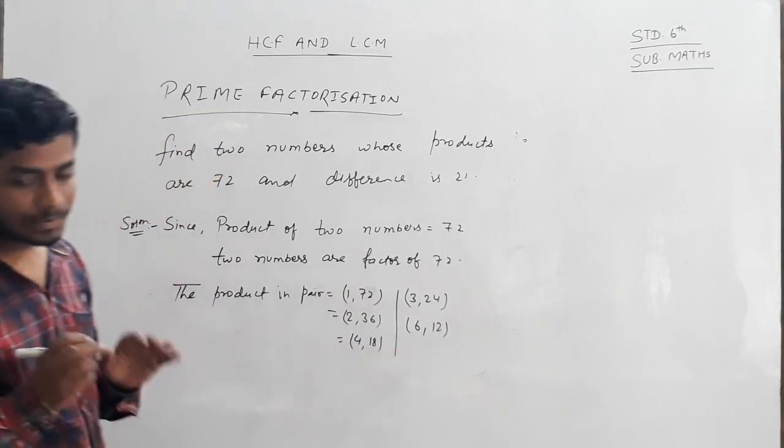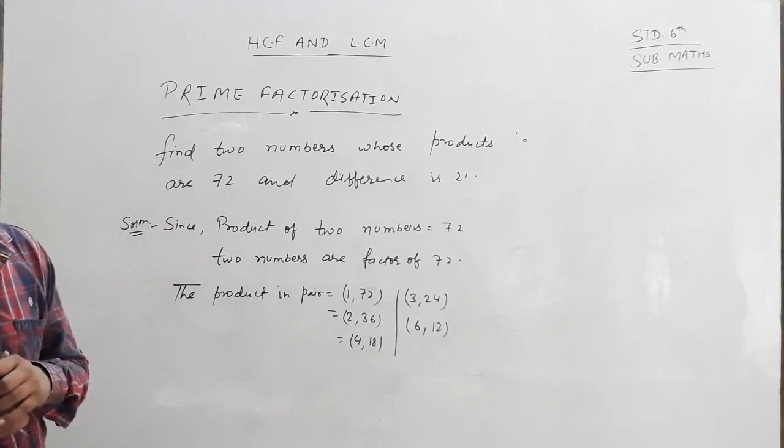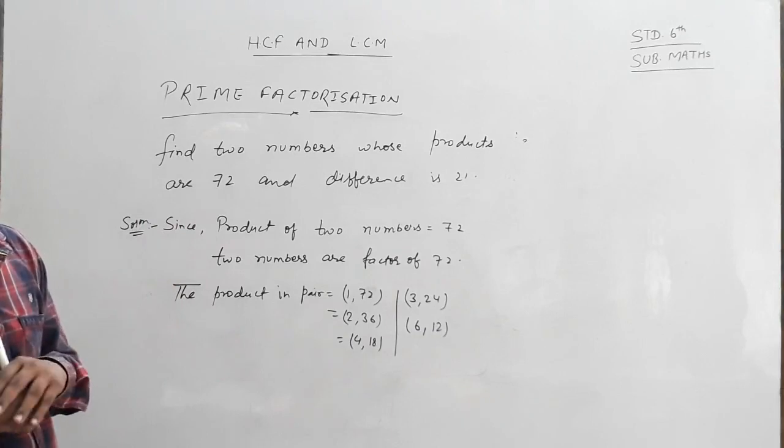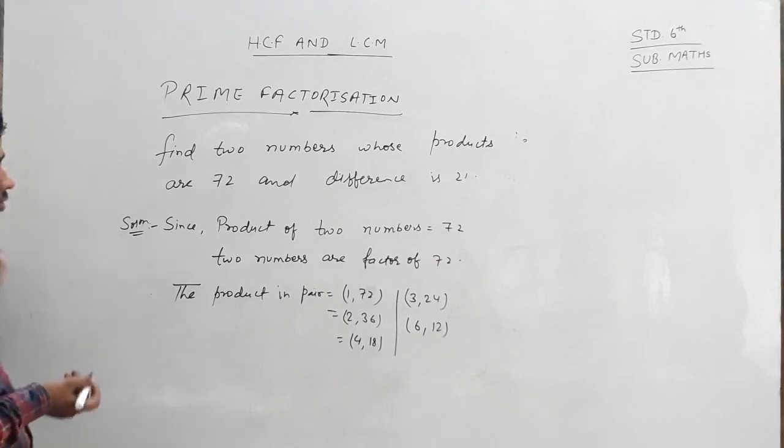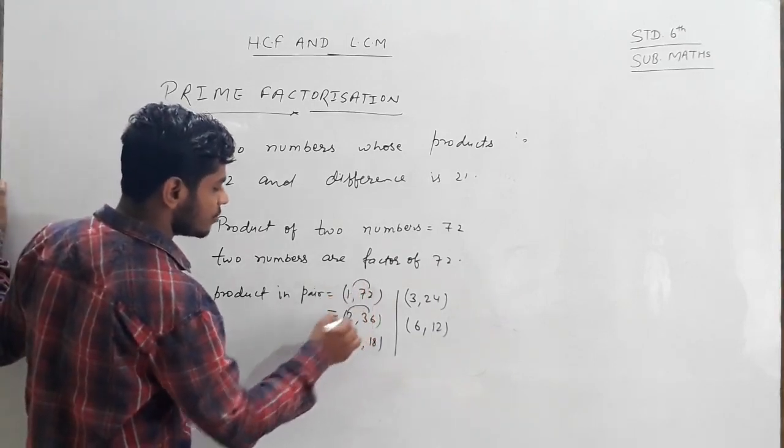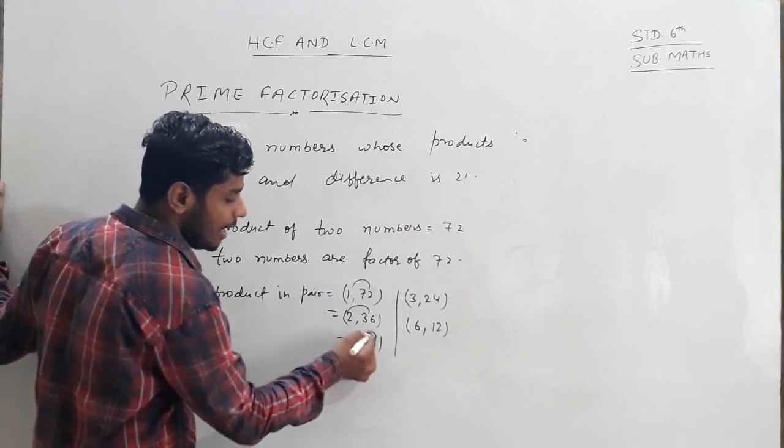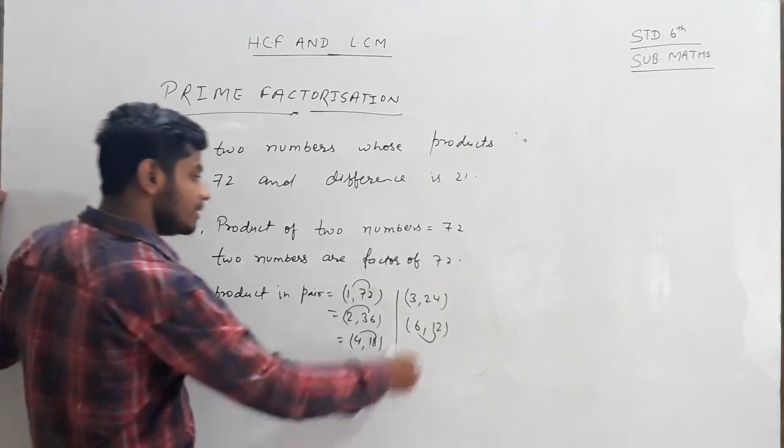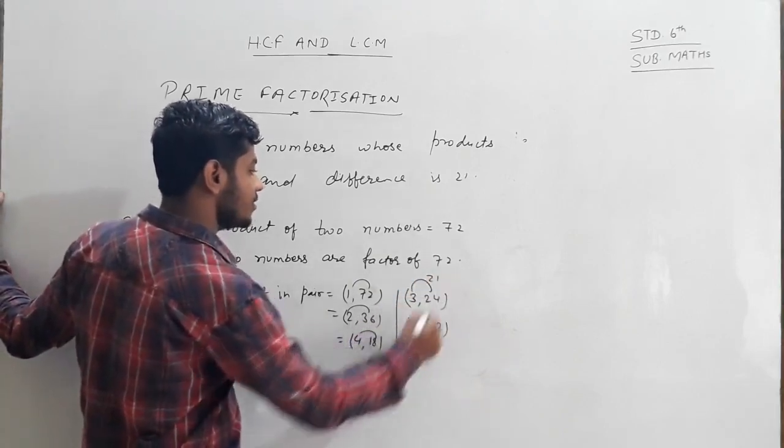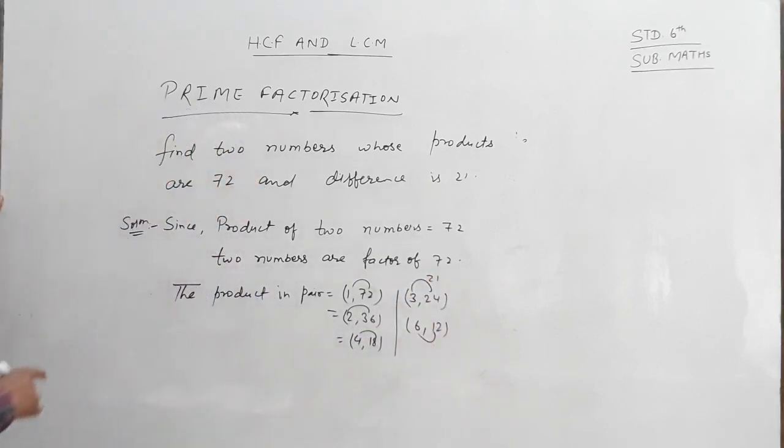In the same way, the difference between 21. Out of these, 3 and 24 is the pair of numbers whose difference is 21.